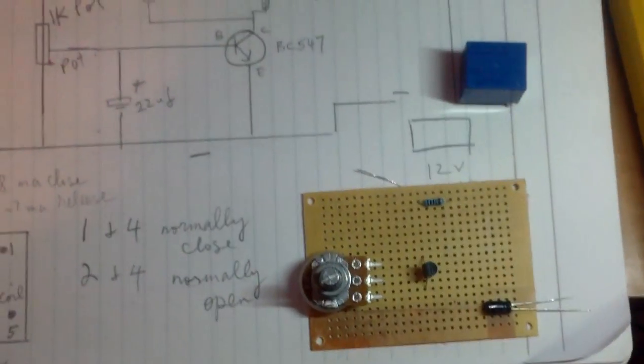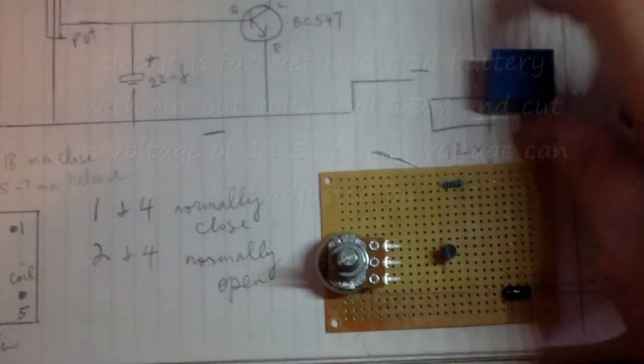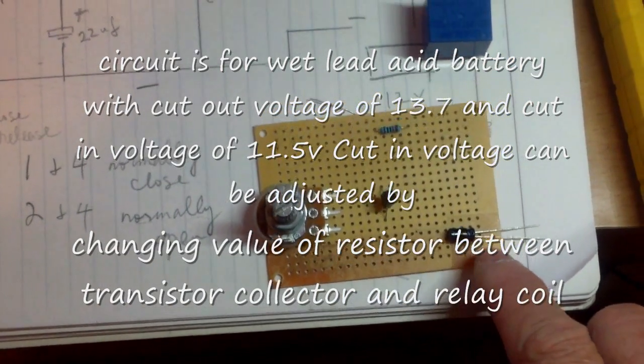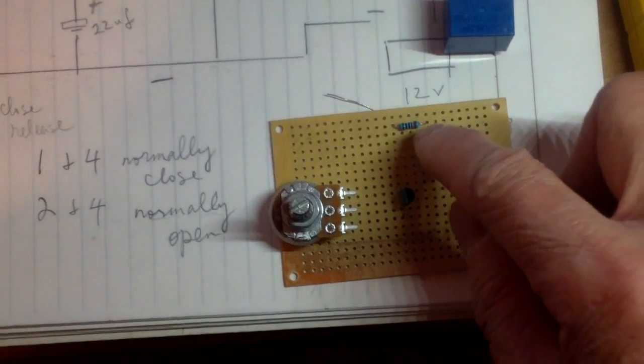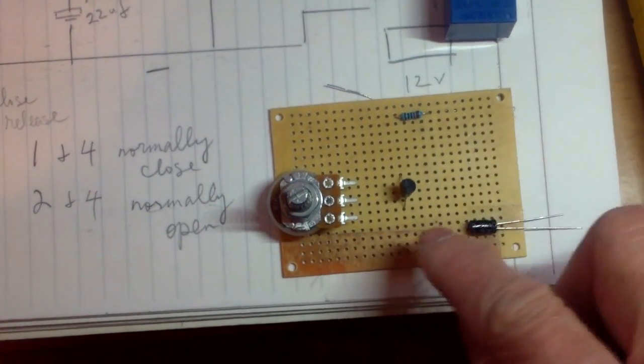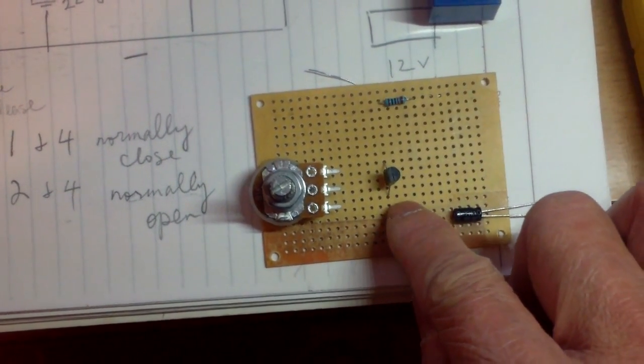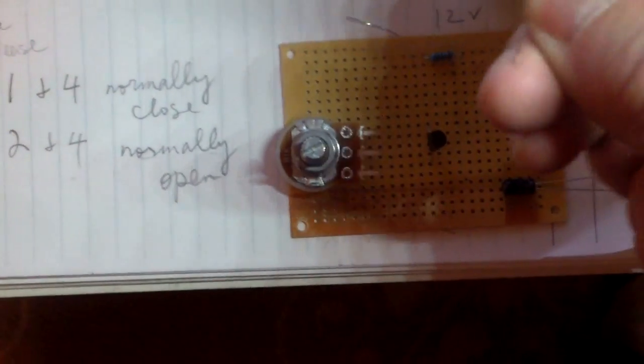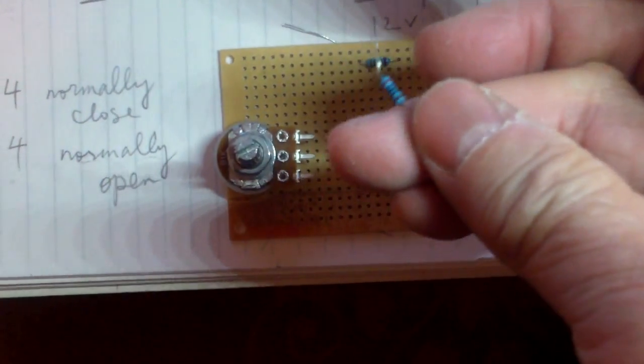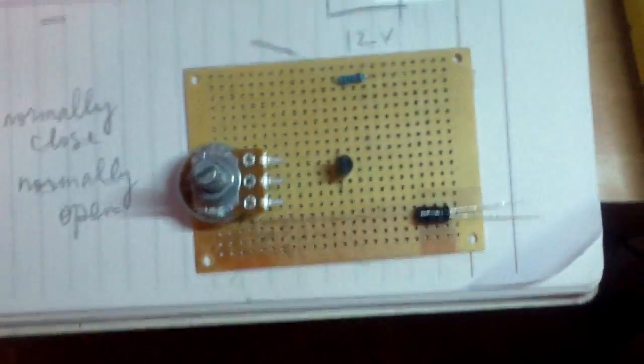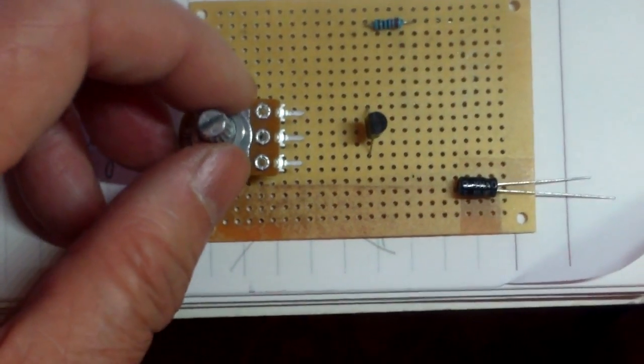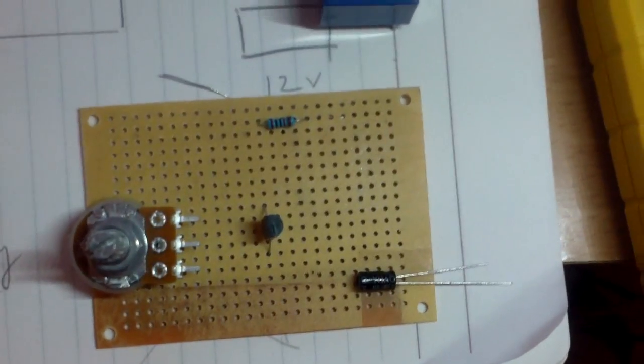This one is very simple. It has six components, a relay, a small capacitor 22 microfarad, a 10k resistor, BC 547 NPN transistor, and a small 270 ohm resistor, and then a 1k potentiometer. That's all the components.